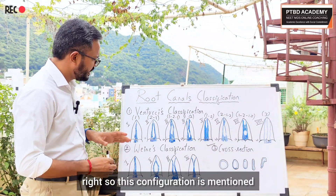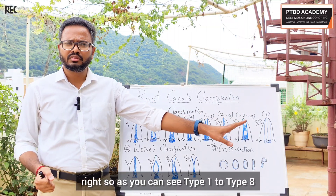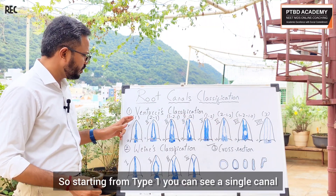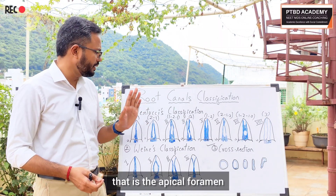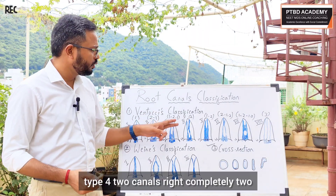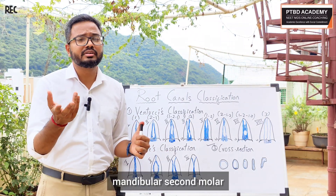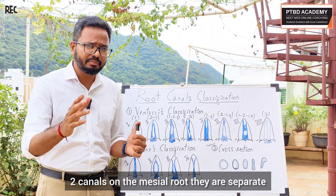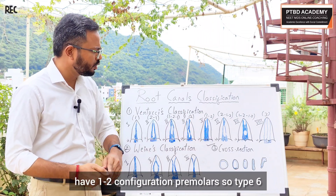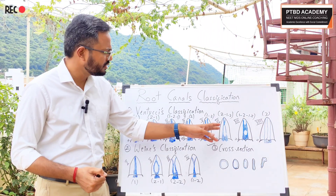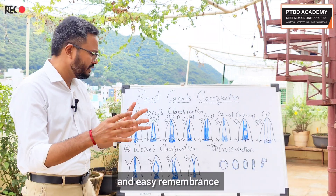This configuration was described by Vertucci in studies done back in 1970. Type 1 is a single canal; type 2 has two canals merging into one and exiting via the apical foramen; type 3 is a 1-2-1 configuration; type 4 has two completely separate canals — the best example being the mesial root of the mandibular second molar, where two canals are separate from the pulp chamber all the way to the apical foramen. Type 5 is 1-2. Type 6 is 2-1-2.